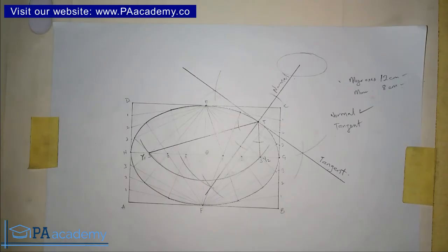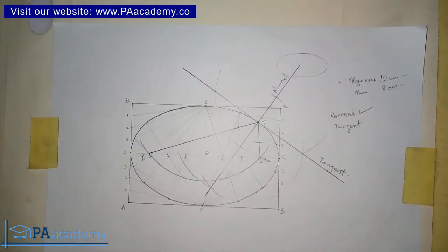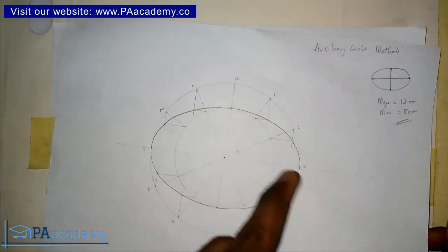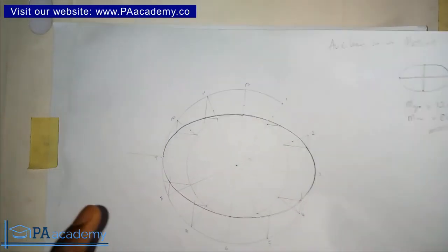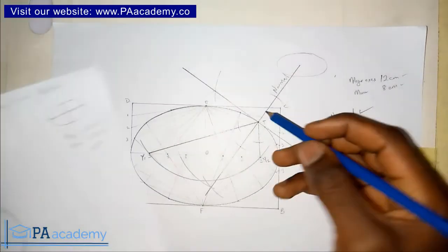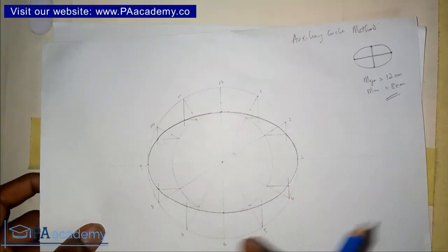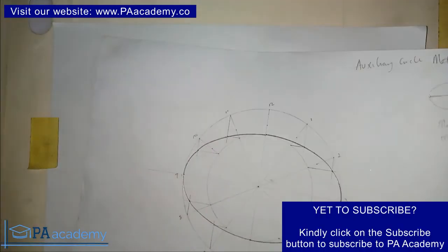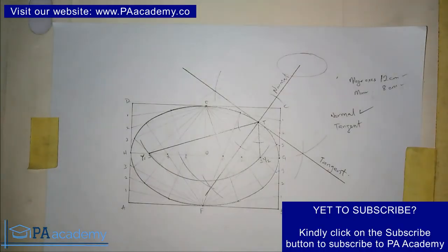So that is how you go ahead to draw a tangent and a normal to an ellipse. In the next video I'm going to use the other ellipse drawn using the auxiliary circle method. We'll pick a different point and show you how to draw both the tangent and the normal again, just to give you more knowledge and practice on how to go about it.